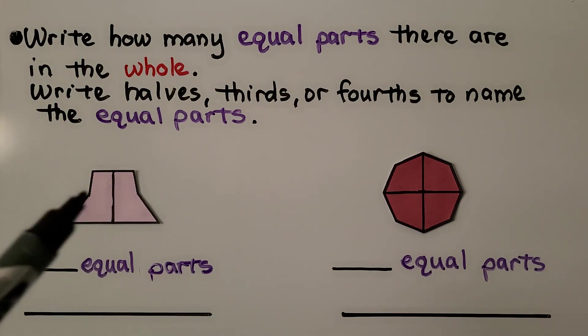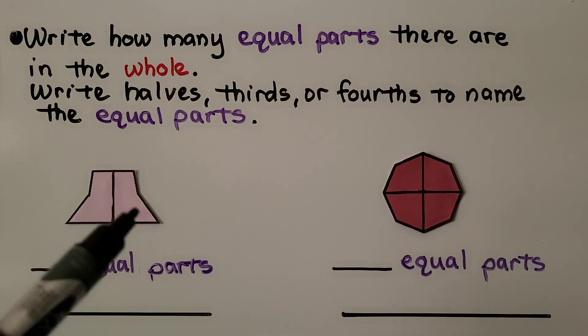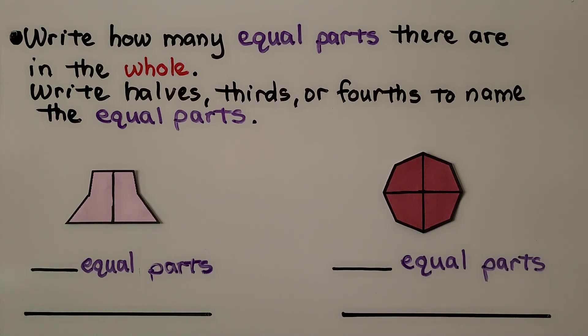and even though it's not a square or a rectangle, we can see that both sides look the same. We have one, two equal parts. If there's two equal parts, that means they're halves.